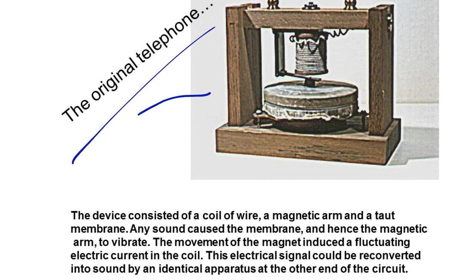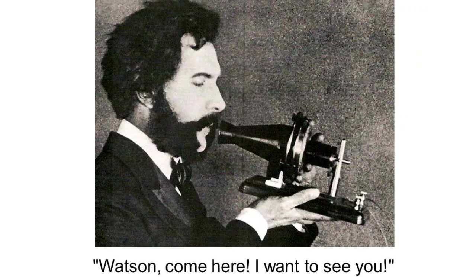The original telephone consisted of a coil of wire, a magnetic arm, and a taut membrane. Any sound caused the membrane, and hence the magnetic arm, to vibrate. The movement of the magnet induced a fluctuating electric current in the coil. This electric signal could be reconverted into sound by an identical apparatus at the other end of the circuit. This is a picture of Alexander Graham Bell using it for the first time, with the message: 'Watson, come here, I want to see you.' We'll discuss the impact of these inventions and how they changed American life more in our lessons in class.